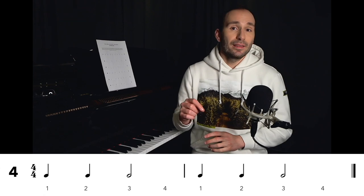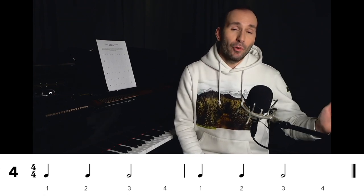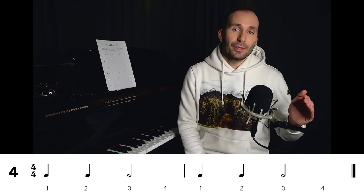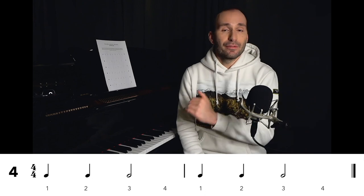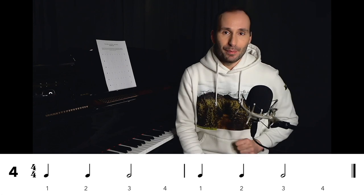And let's write underneath the beat numbers. And now you can see that the first crotchet is going to be beat number one. The second crotchet is going to be beat number two. And the minim is going to be beat number three and four, because it's two beats long. So it has to take up the last two beats of the bar.